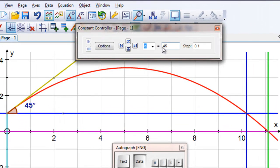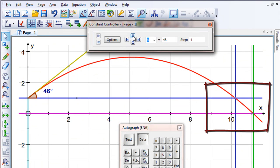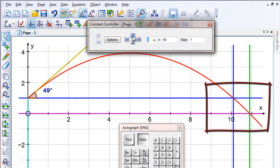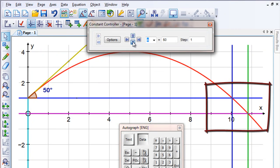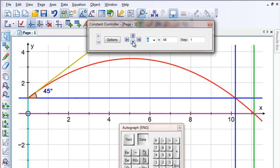Now we'll get the constant controller out. This parametric equation is full of constants, all of which can be varied using this nifty controller here. We can vary the step and the value. So I'm going to change the step to 1 so I can now change the angle in steps of 1 degree. And you can see that at 45 degrees, it's certainly the maximum on the horizontal distance.